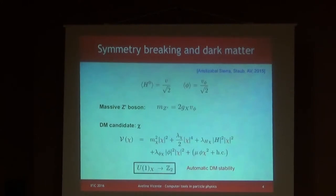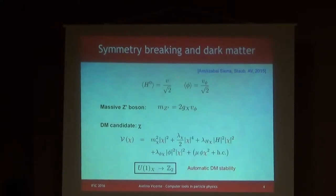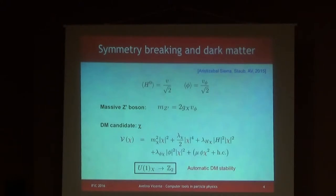The symmetry breaking takes place as follows: the additional U1X is going to be broken by this phi field, and the standard model gauge group is broken by the standard model Higgs. The spontaneous breaking of the U1X piece will give rise to a massive Z prime, as usual. The mass of this Z prime would be proportional to the new gauge coupling times the VEV of the new field, times a factor of 2 due to normalization.